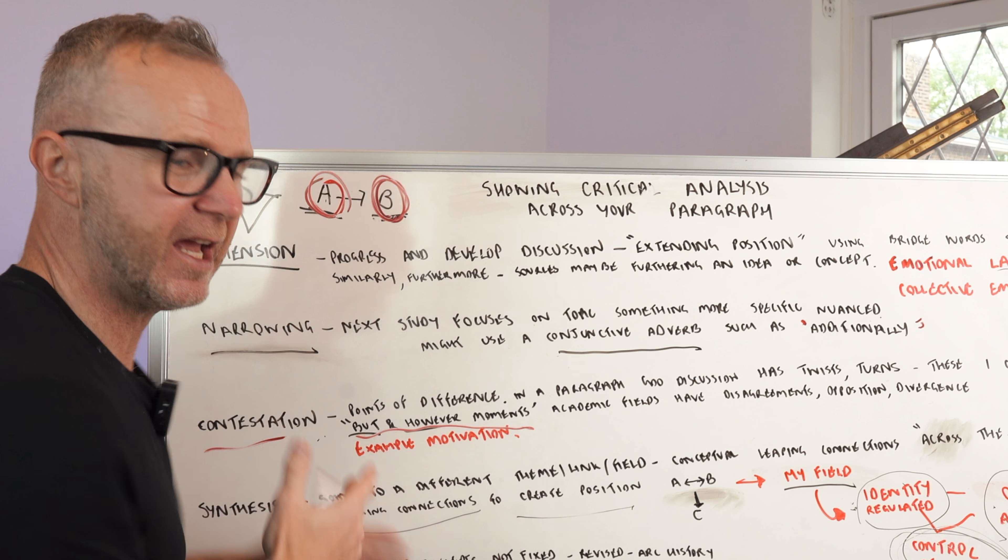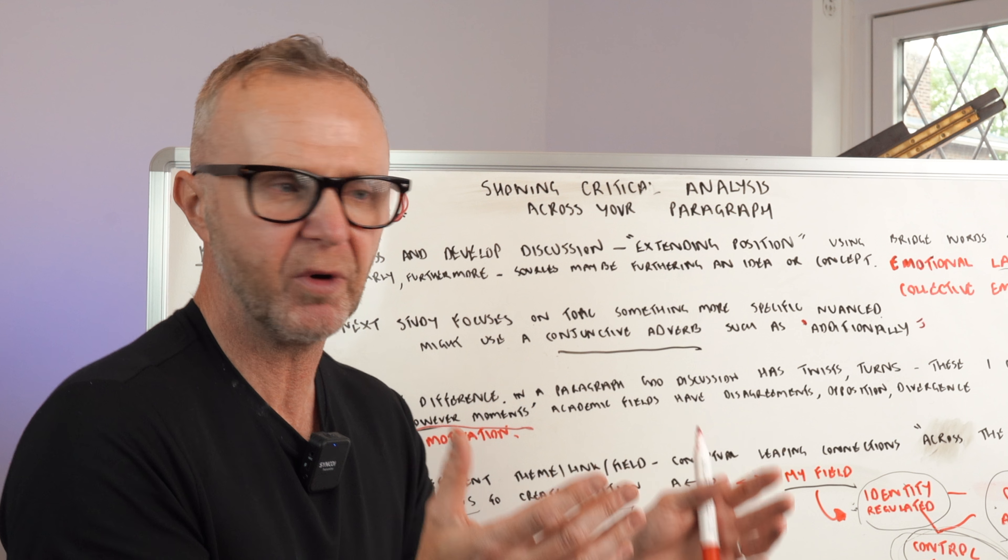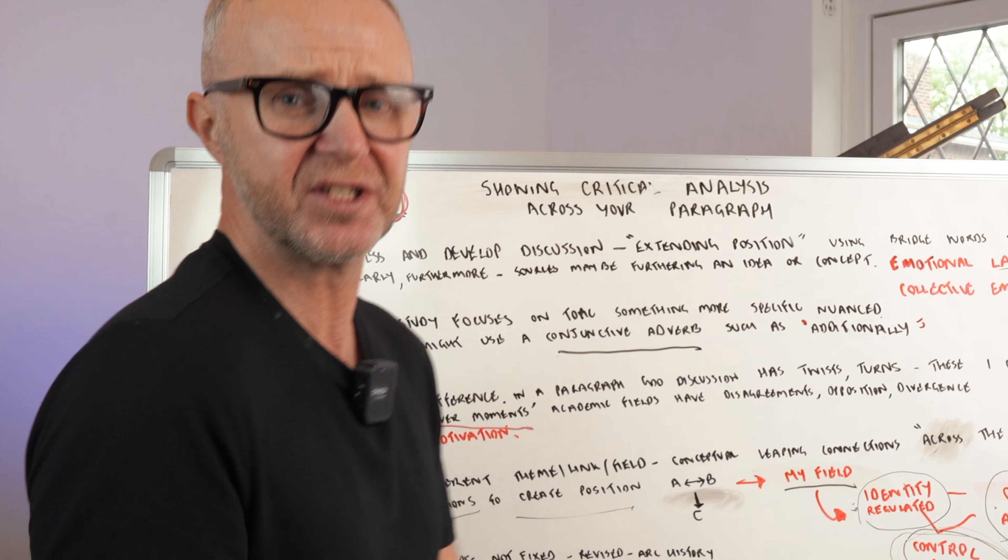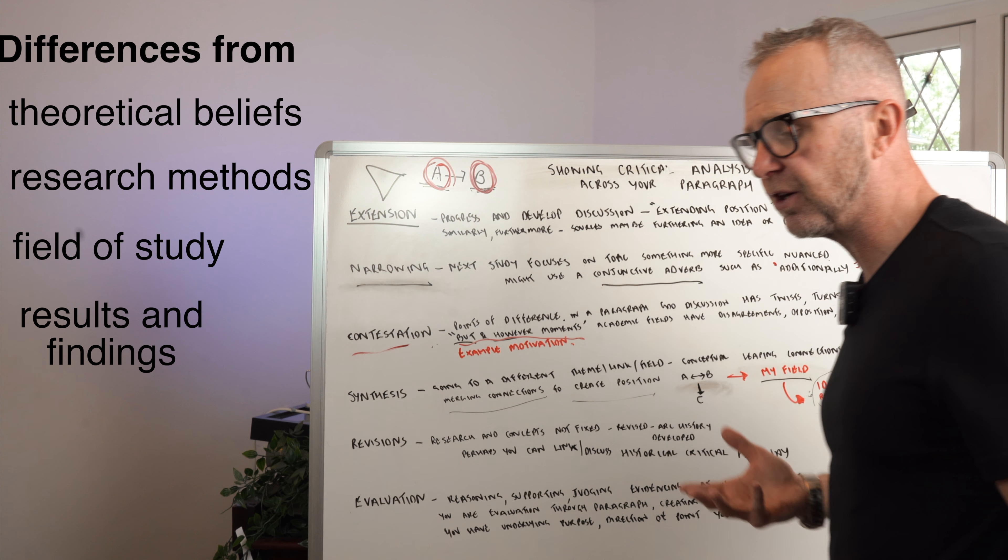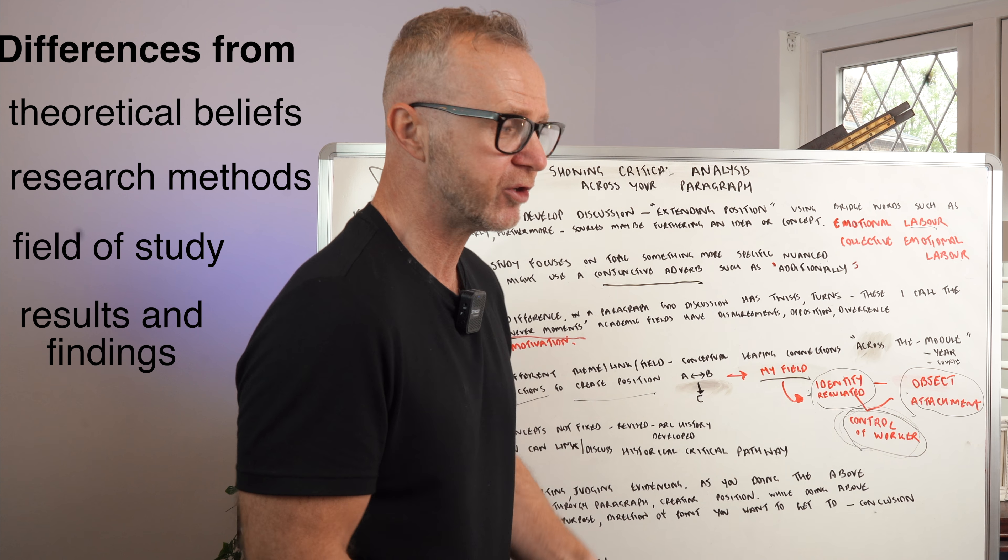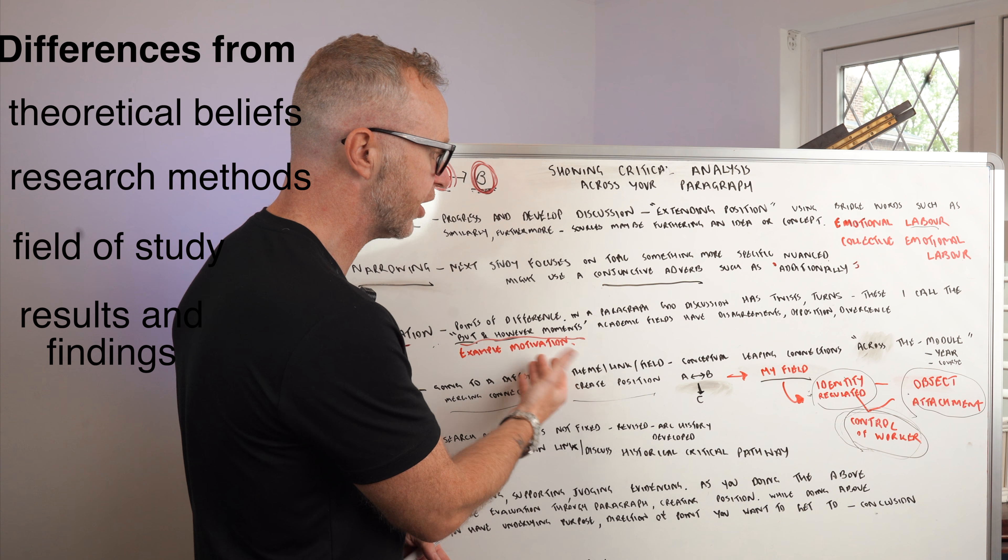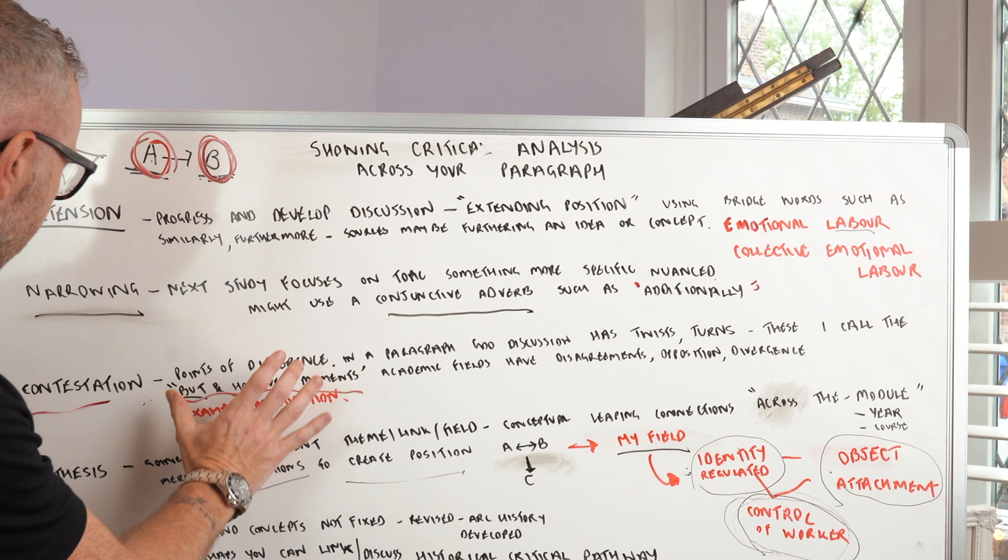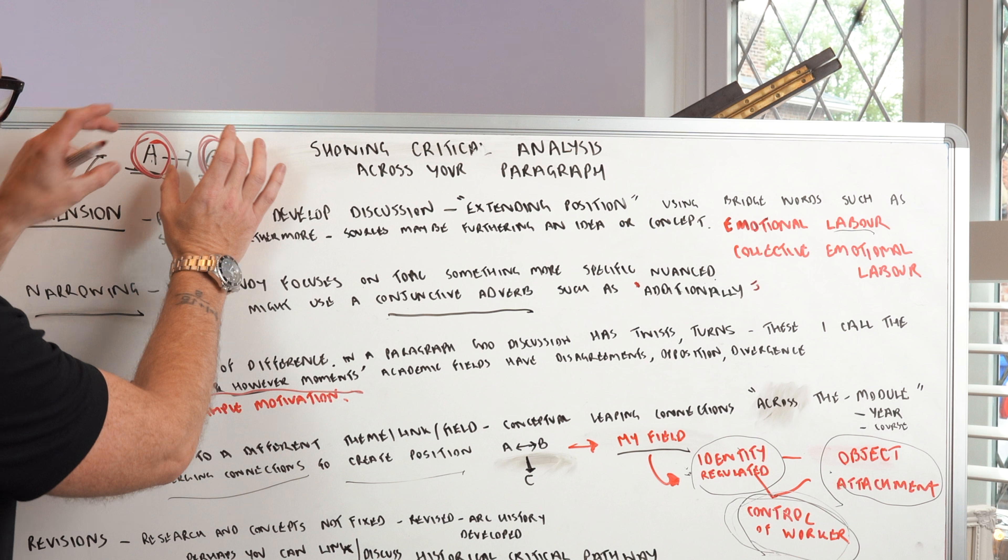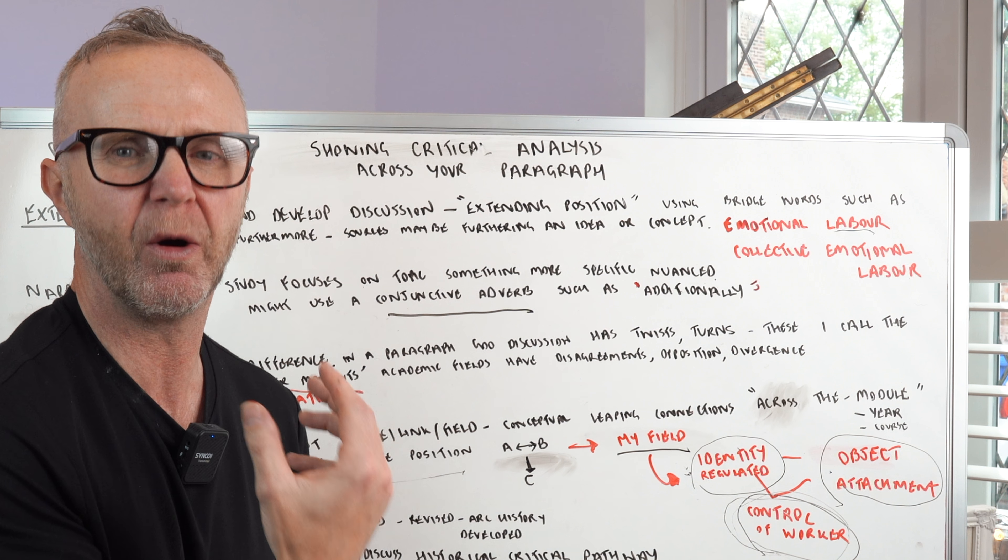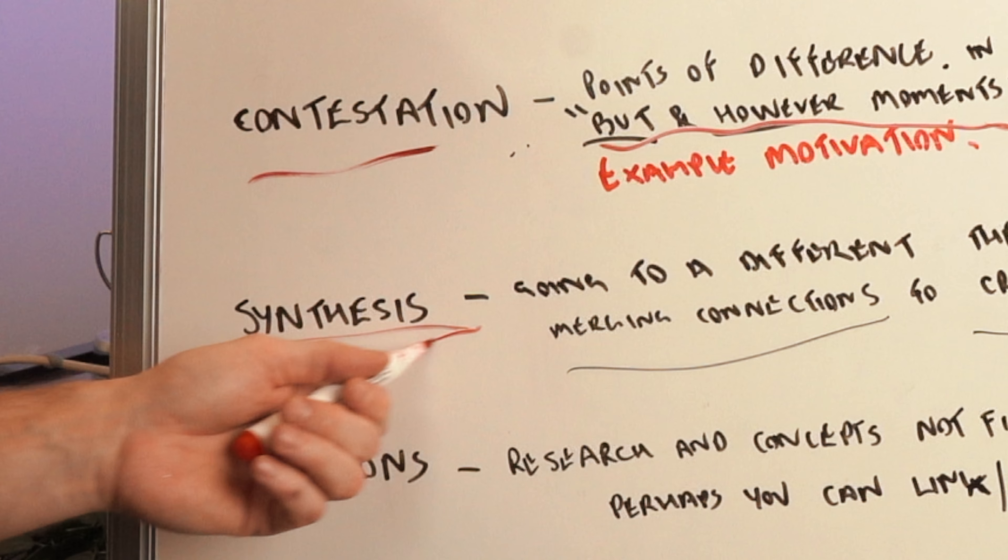An example I've got here is motivation. Within the field of trying to understand motivation at work is contested, there's divergence, different ways of thinking about how motivation occurs. This can come from your research background, your understanding of the world, the different methods that you might use to try and understand motivation. If you can show that in your paragraph these differences, these divergent thoughts, and bring them into contestation, then you're going to get awarded higher marks because it's obvious to the marker that you're doing this.